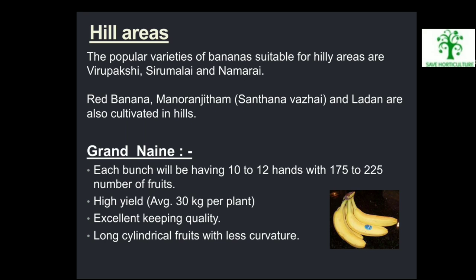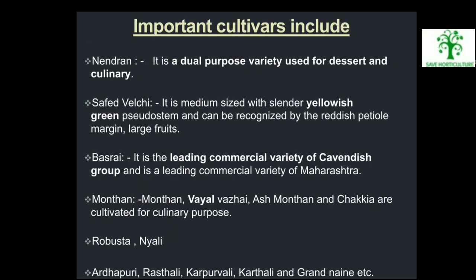Grandnene is a subtropical variety of banana. Each bunch will have 10 to 12 hands with 175 to 225 fruits. High yield averages 30 kg per plant, with excellent keeping quality and long cylindrical fruits with less curvature. Other important cultivars include Nandran — a dual-purpose variety used for dessert and culinary. Sapheth Velchi is a medium-sized variety with slender yellowish-green pseudostem, recognized by reddish petiole margin and large fruits. Basrai is the leading commercial variety of the Cavendish group in Maharashtra. Manthan, Vajai, Ash Manthan and Chakya are cultivated for culinary purposes. Robashtha, Niyali, Ardhapuri, Rasthali, Karpurawali, Karthali and Grandnene are other cultivars of banana.